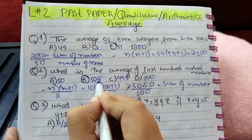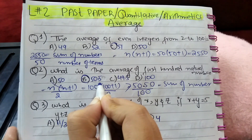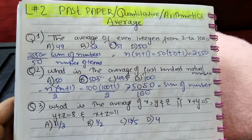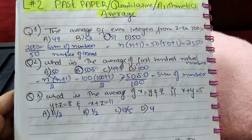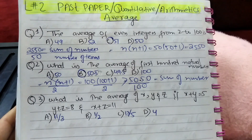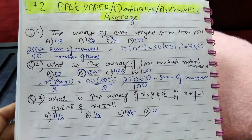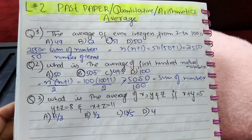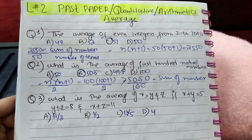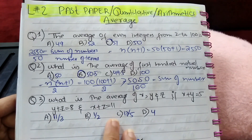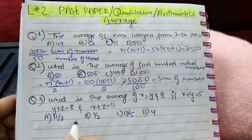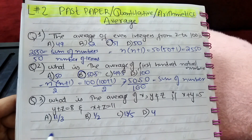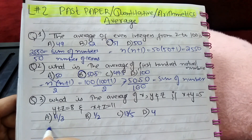So 50.5 is the correct option. Next question: what is the average of x, y, and z, if x plus y equals 5, y plus z equals 8, and x plus z equals 11? As these are three equations, first add all of them and then divide by 3 to get the average.